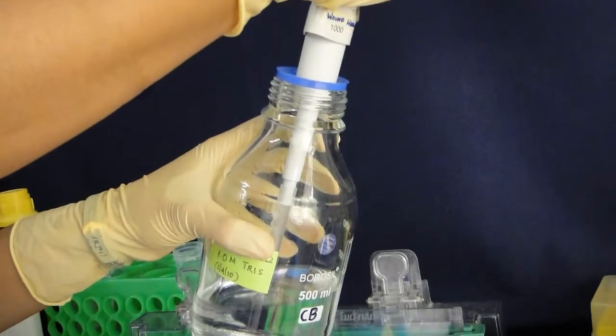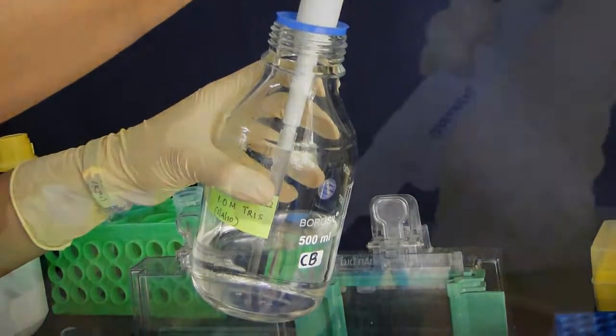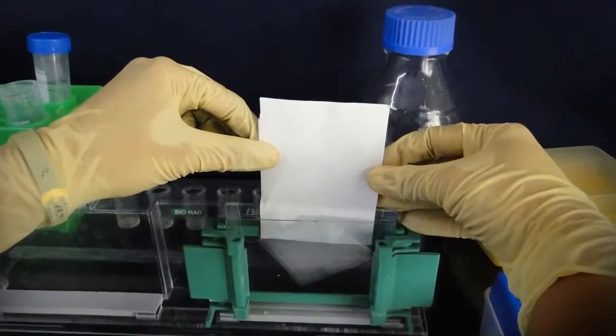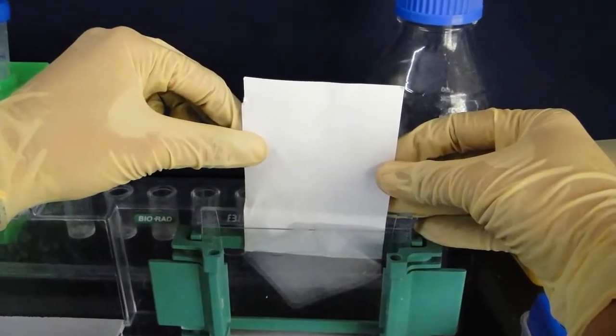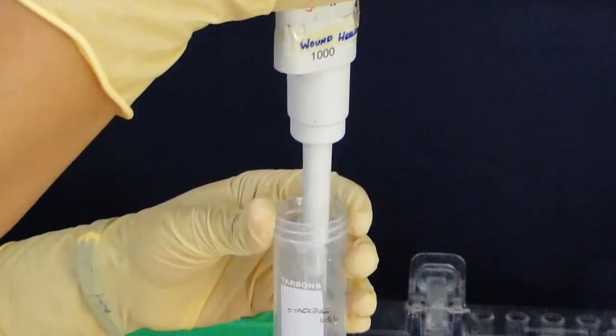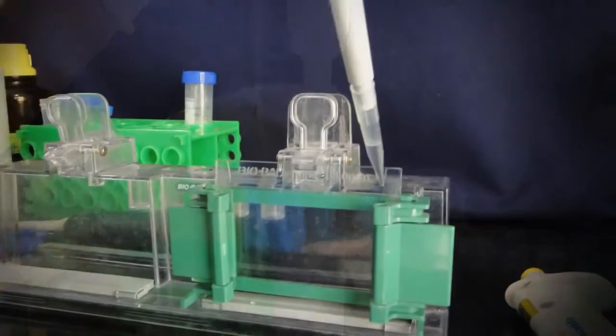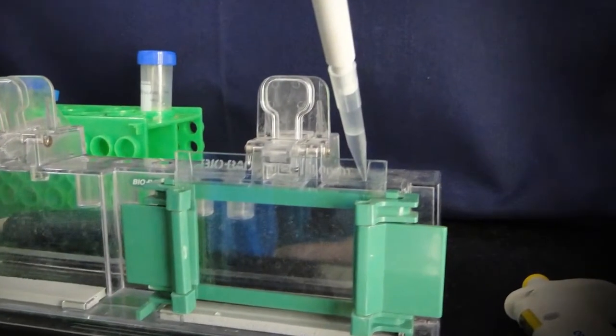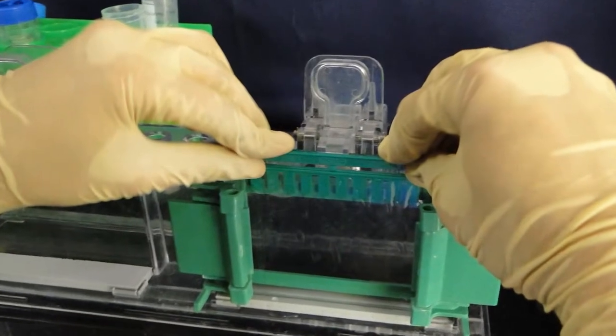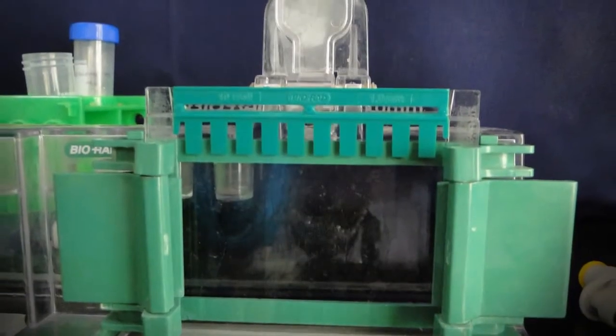Now prepare the stacking gel monomer solution by combining all the reagents except APS and TEMED. Drain the isopropanol with the strips of filter paper or blotting paper. Now add APS and TEMED to the monomer solution just before pouring it in between the slides and mix well by swirling gently. Now place a comb in the stacking gel sandwich. Allow it to polymerize for 10 minutes.